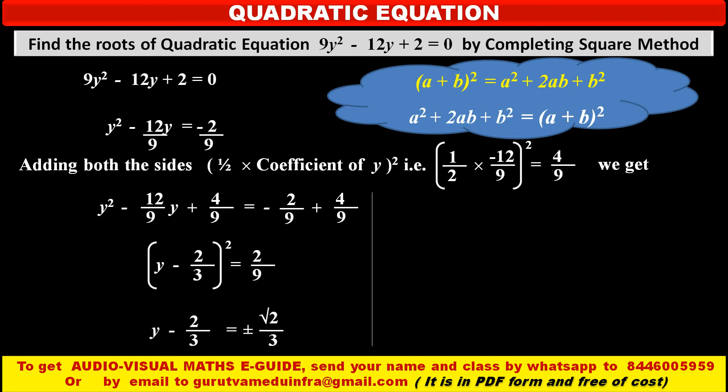By taking square root on both sides we get in left hand side y - 2/3 is equal to in the right hand side ±√2/3.